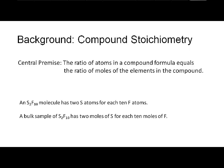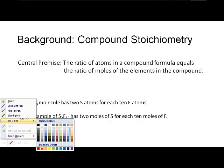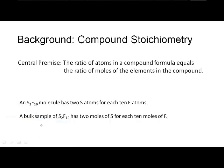For example, an S2F10 molecule, disulfur decafluoride, has two sulfur atoms for every ten fluorine atoms. A bulk sample of S2F10 has two moles of sulfur for ten moles of fluorine. So we have a connection between atoms and moles, and therefore a connection between moles and the formula of the compound.